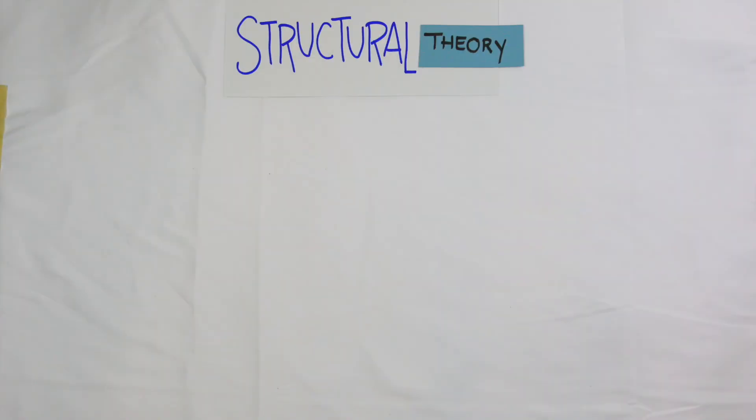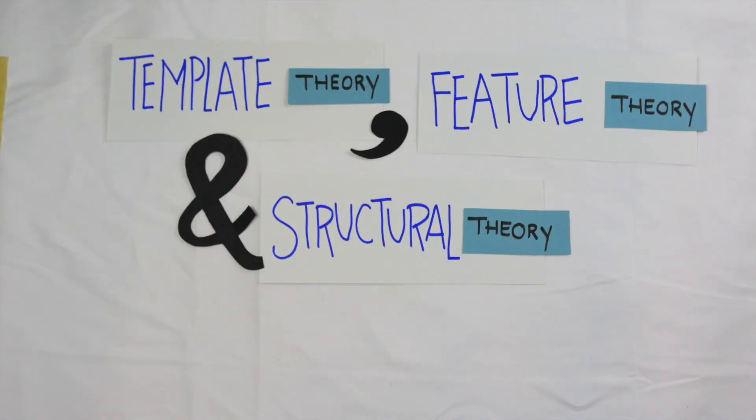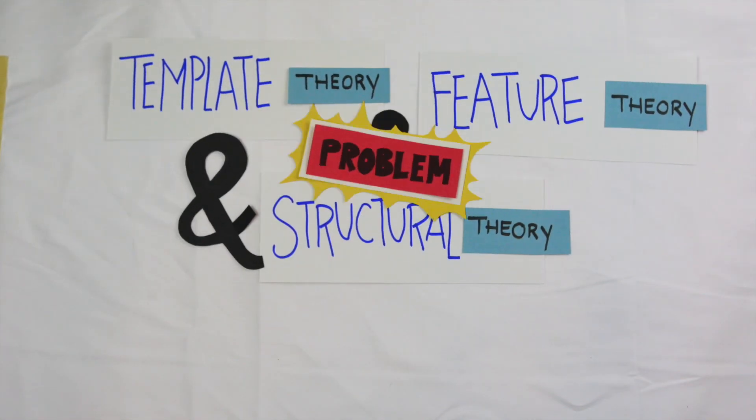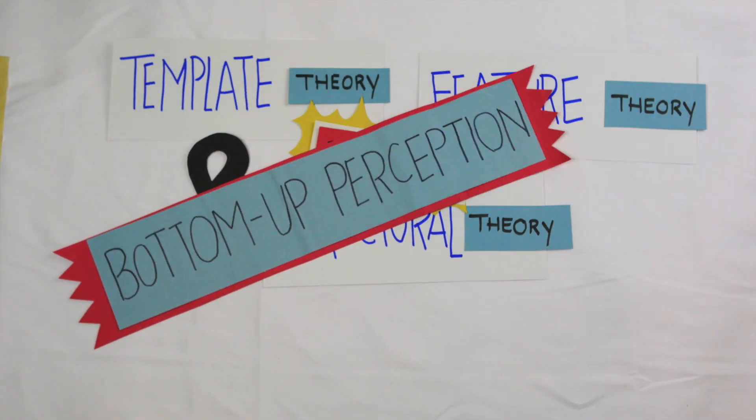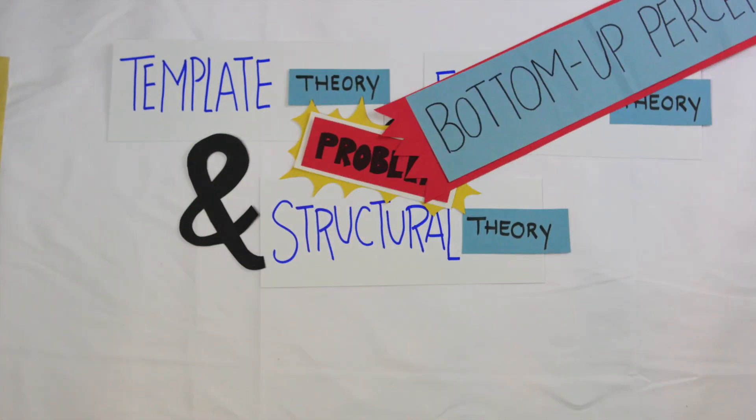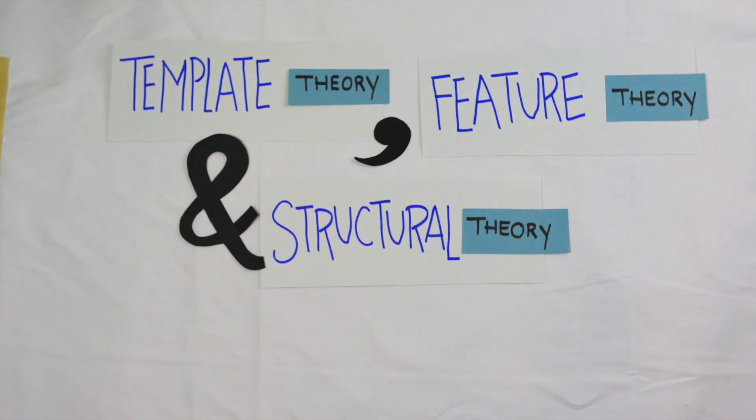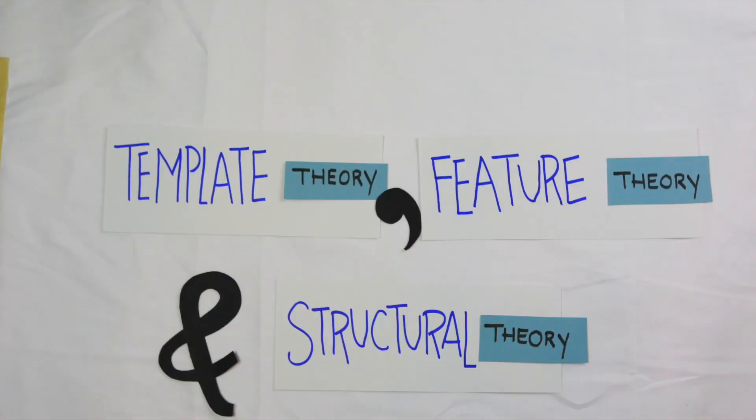All of these theories have different angles and perspectives on pattern recognition. However, one of the main faults they all have in common is only looking at bottom-up perception. When we accumulatively think about pattern recognition and perception, we have to take into account all of the top-down mechanisms that are present.